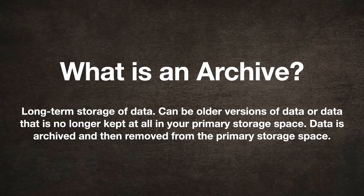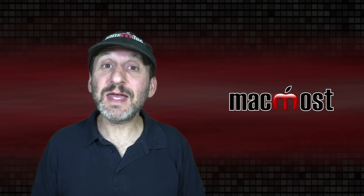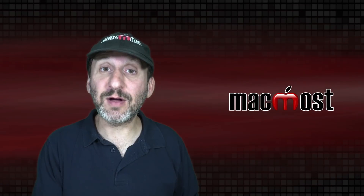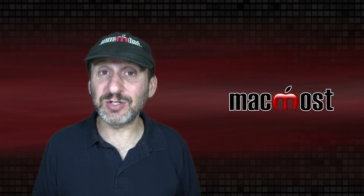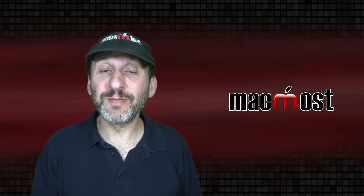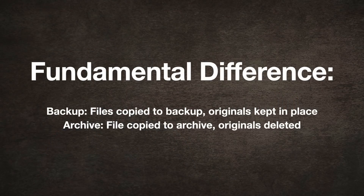An archive is fundamentally different. It's long-term storage. The idea is that you have data — usually some files — that you don't need anymore, or at least you're pretty sure you won't need them, but you don't want to delete them forever and they're taking up space on your hard drive. So you take them off your hard drive and put them somewhere else, somewhere you don't necessarily have everyday access to, like an external drive sitting in a drawer. A backup is a copy while all your data is still on your drive, but an archive is when you copy a file and then delete the original — the file isn't on your drive anymore, but you know you've got it in the archive location.